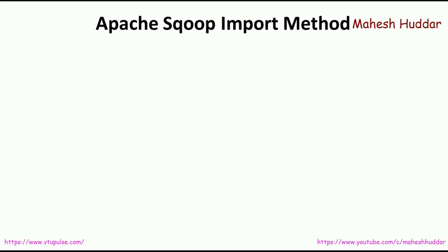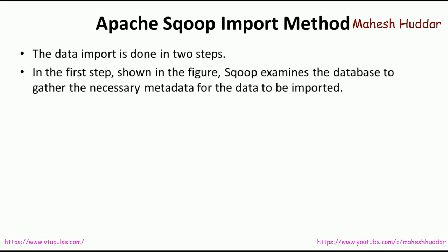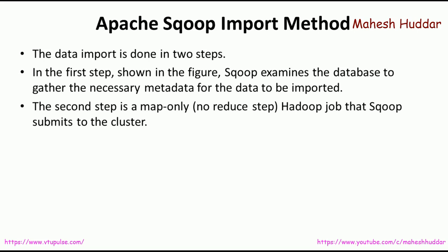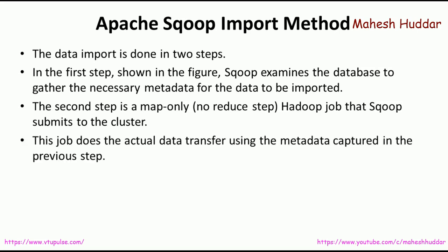Now we see how the Apache Sqoop import method works. The data import in Apache Sqoop is done in two steps. In the first step, Sqoop examines the database to gather the necessary metadata for the data to be imported — for example, the database name, table names, the size of the table, how many records there are, who is the owner of that particular database, and so on. In the second step, a Hadoop job is created. It is just a map-only step — there is no reducer step, just a mapper, a map-only job that is submitted to the cluster so that the actual data transfer takes place.